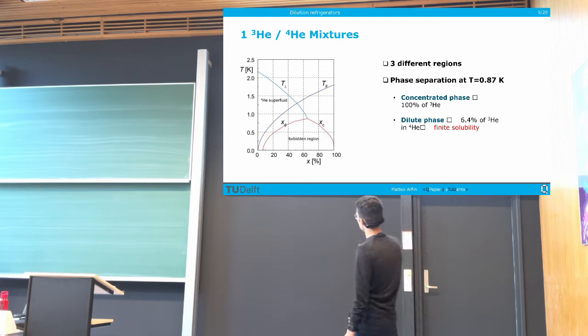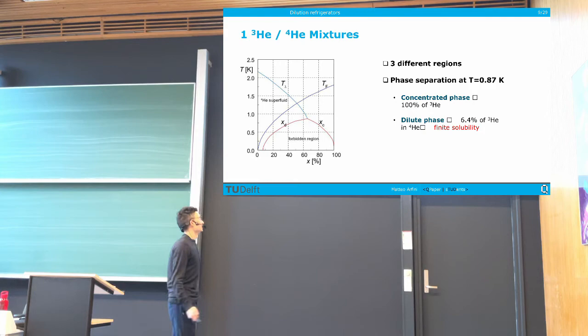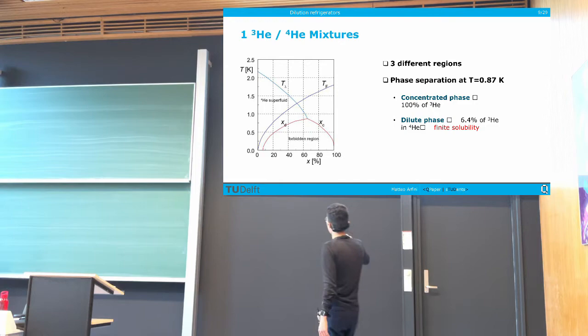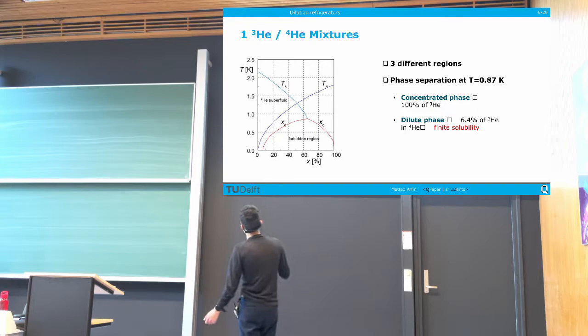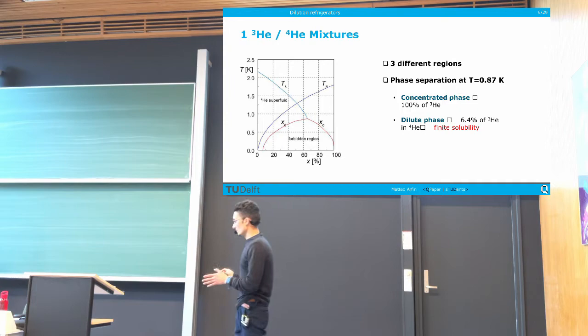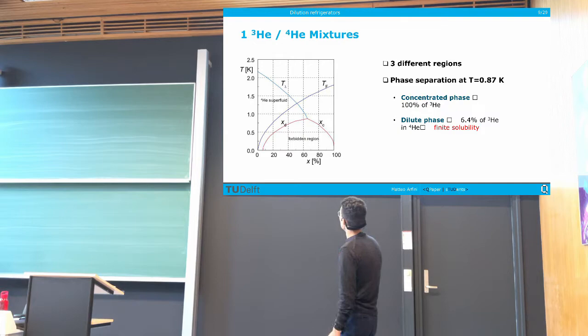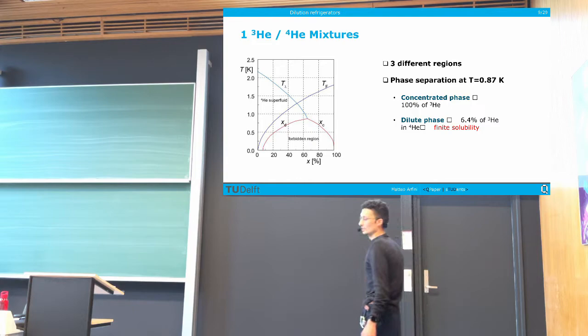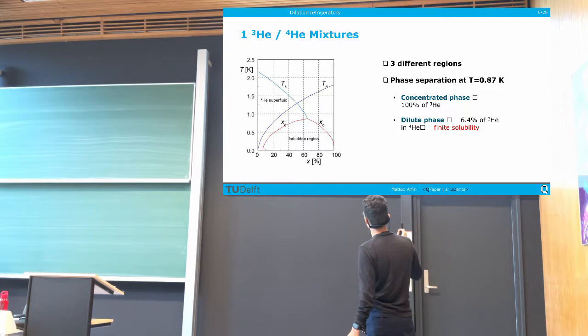On one side, the concentration of helium-3 grows toward 100% at zero temperature — this is the concentrated phase. But a very interesting thing takes place on the other side: the concentration of helium-3 does not reach zero at zero Kelvin. We have a finite concentration of helium-3 in helium-4 — namely 6.4–6.6% — which makes what we call the dilute phase. We call this feature finite solubility, and it is what enables us to reach low temperatures in this system.